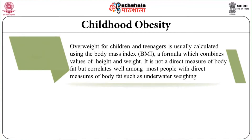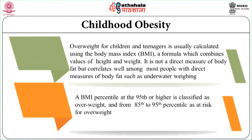Overweight for children and teenagers is usually calculated using the Body Mass Index (BMI), a formula which combines values of height and weight. It is not a direct measure of body fat but correlates well among most people with direct measures of body fat such as underwater weighing. A child's BMI is compared to a gender-specific age-for growth chart to obtain a percentile ranking, which shows the relative position of the child's BMI among others of the same gender and age. A BMI percentile at the 95th or higher is classified as overweight, and from the 85th to 95th percentile as at risk for overweight.